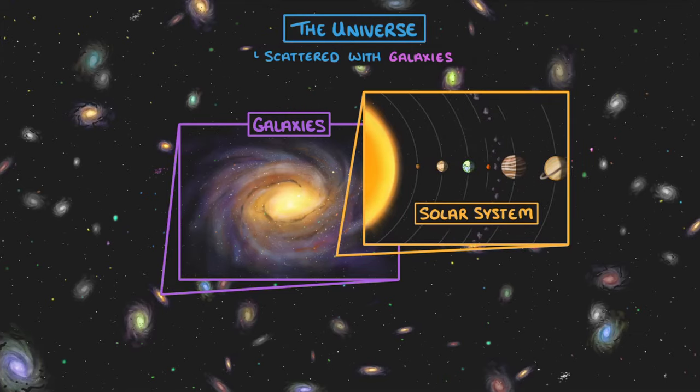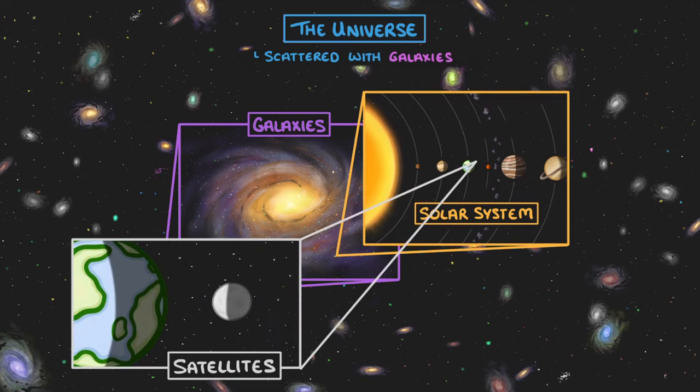And solar systems consist of a central star orbited by planets like Earth, which themselves can be orbited by satellites like the Moon.